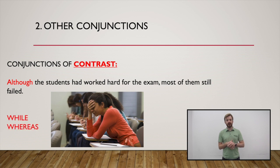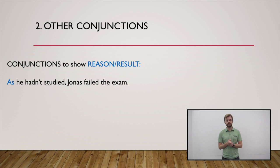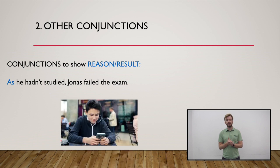We will also practice conjunctions to show reason or result. As he hadn't studied, Jonas failed the exam. These conjunctions generally describe the why of the main clause, like why something happened. Jonas failed the exam because he hadn't studied.